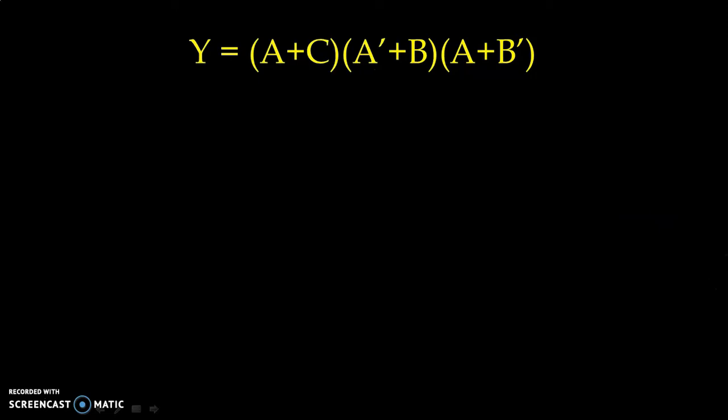Now, to implement this type of Boolean function, first we have to implement sum term. And for the sum term, we know that we require OR operation. And then we have to use OR gate. For the product, at the last, to prepare the product of sum, we need AND gate. For the inverted input, we use inverter or NOT gate.